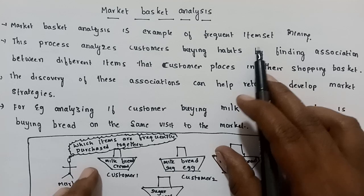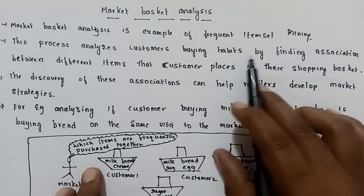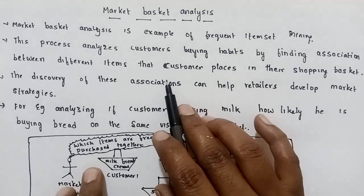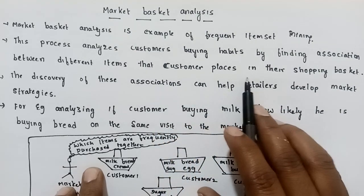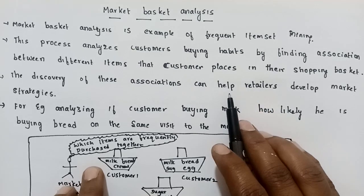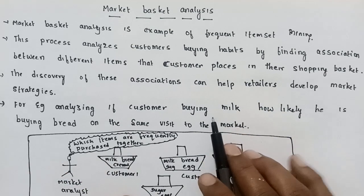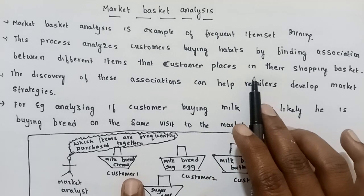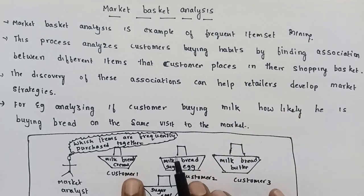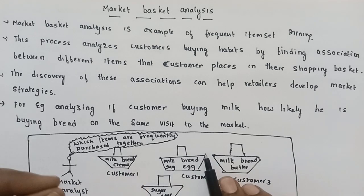This process analyzes customer buying habits by finding associations between different items that a customer places in their shopping basket. Customers are shopping, and if you have a trolley or a basket, you can find items that you can place in it.